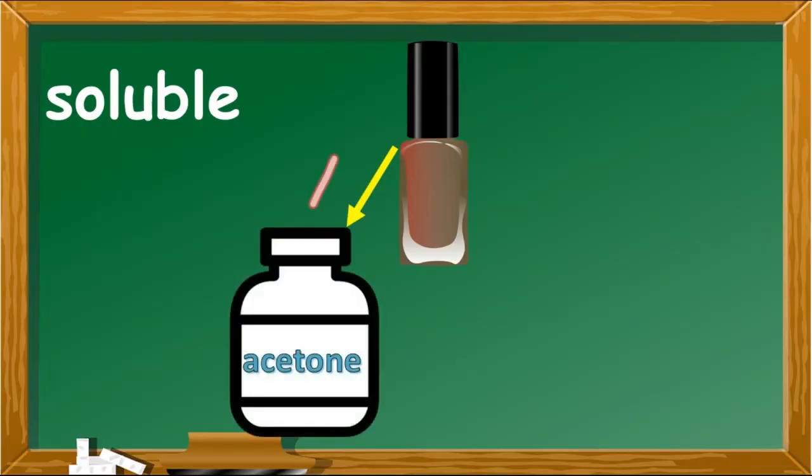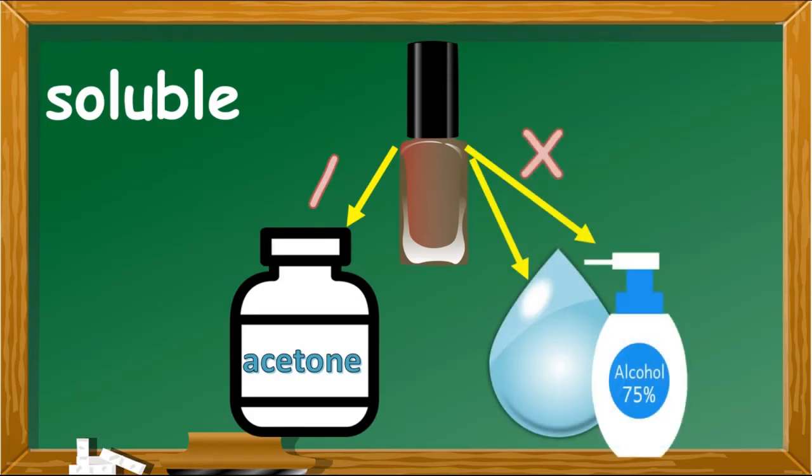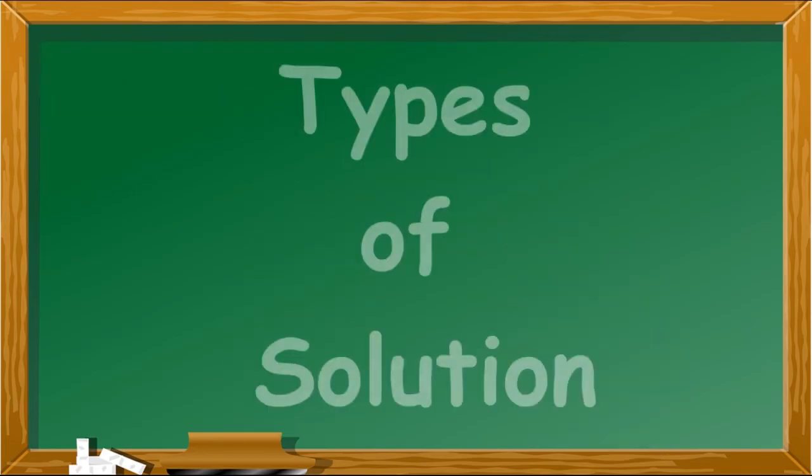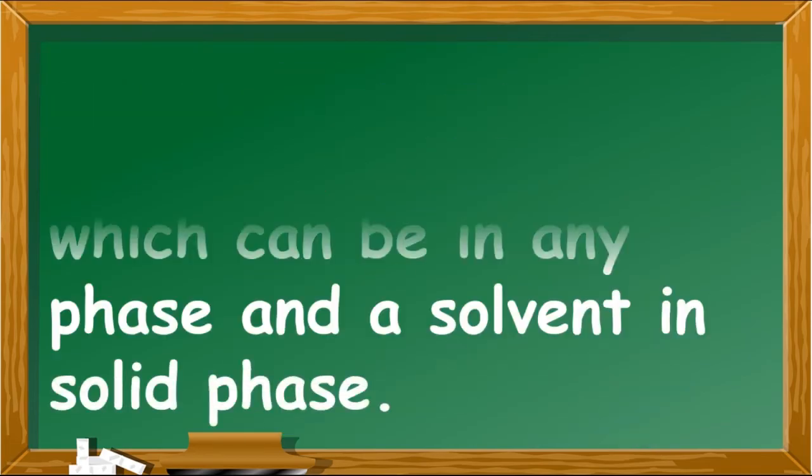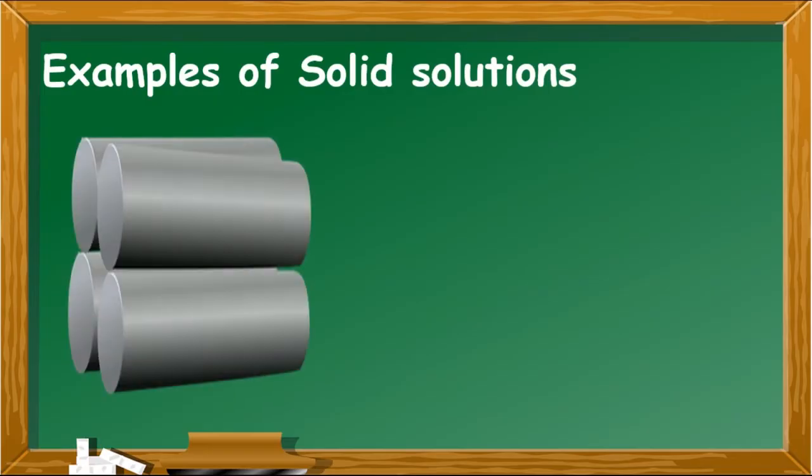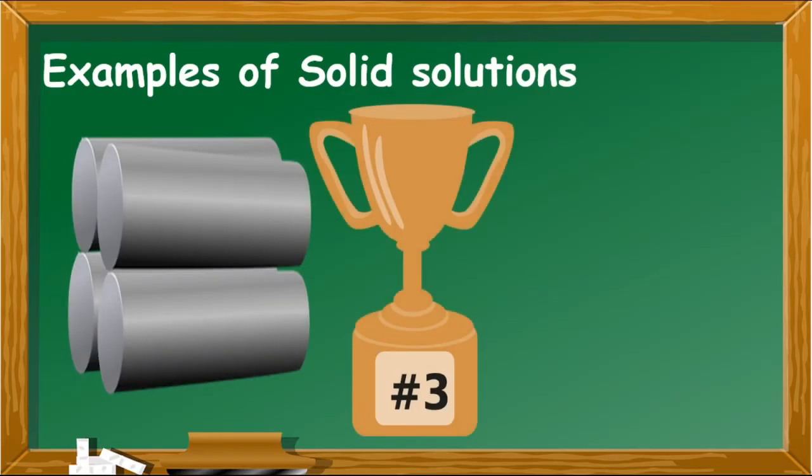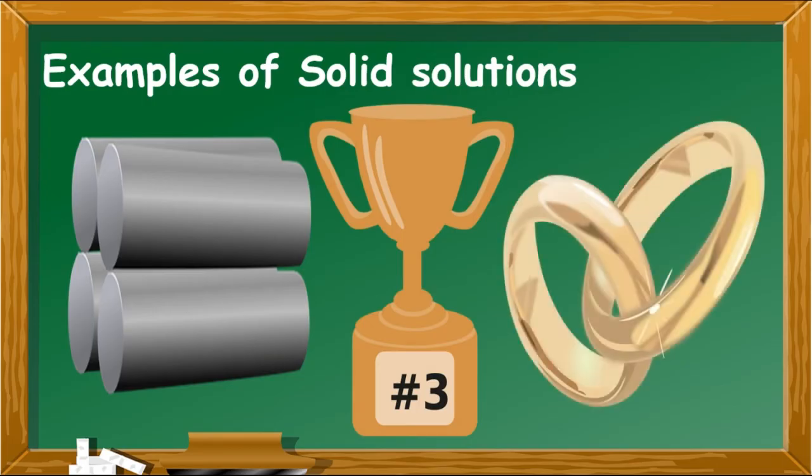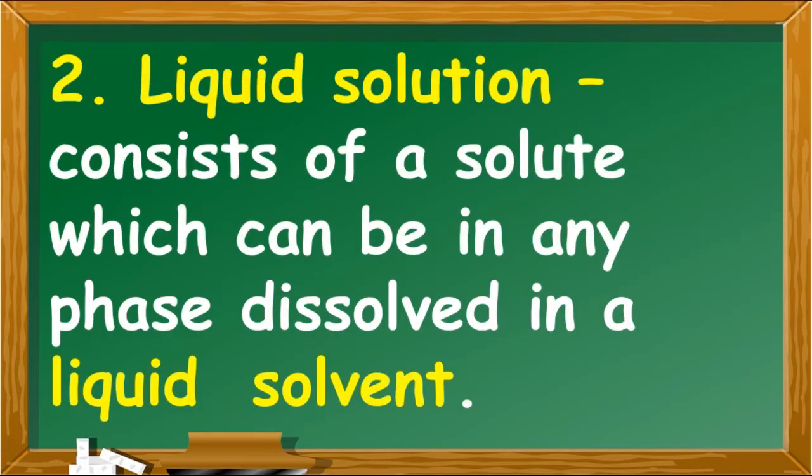Types of solutions: Solid solution consists of a solute which can be in any phase and a solvent in solid phase. Examples of solid solutions are steel, bronze, charcoal filter, dental amalgam, alloys, and gold jewelry.